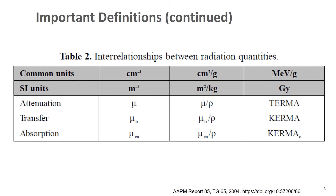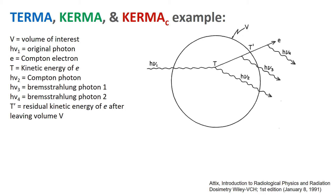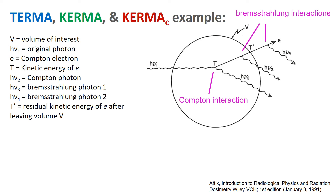Let's look at an example case. A photon with energy hν₁ enters a volume of interest V. A Compton interaction occurs, setting an electron in motion with kinetic energy T, and producing a Compton photon hν₂. As the electron travels through the volume, it gives kinetic energy through collisions, and there are two bremsstrahlung interactions — one occurring within the volume and one outside the volume.